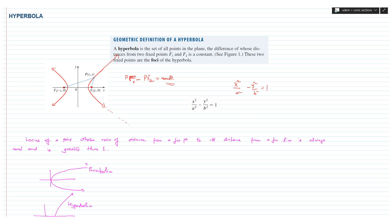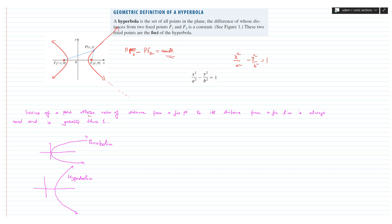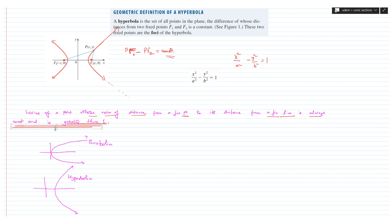These two fixed points are the foci of the hyperbola. Another definition of a hyperbola is the locus of all those points whose ratio of distances from a fixed point to its distance from a fixed line is always constant and greater than 1. This is a universal definition of all conics — the only difference is the eccentricity: for a parabola it is 1, for an ellipse it is less than 1, and for a hyperbola it must be greater than 1.